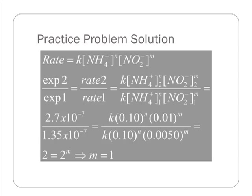And the same thing is going to happen as happened before. I don't know what K is, but it will factor out. And the 0.1 to the N's now will also both factor out. And so I'm left with the ratio of my rates to the ratio of the concentrations of NO2 minus each to the M. And you can see here that the ratio of the rates is two. The ratio of the concentrations of NO2 minus is also two.